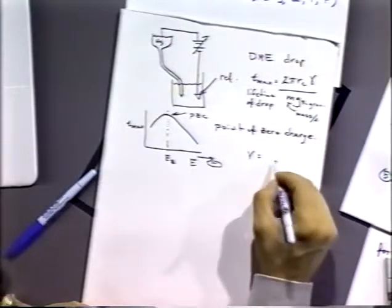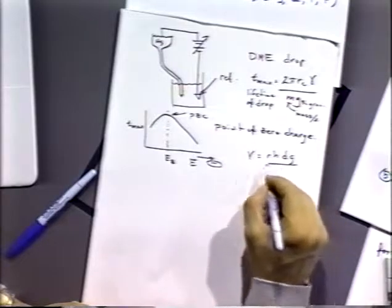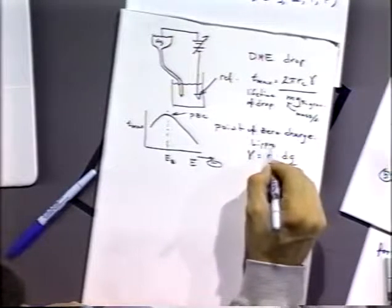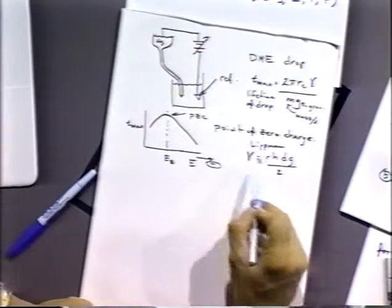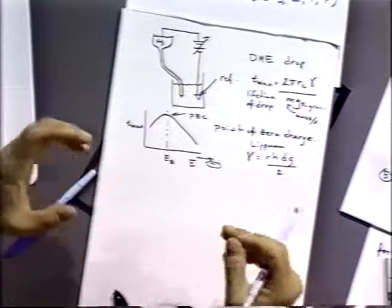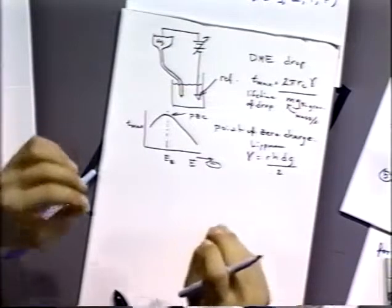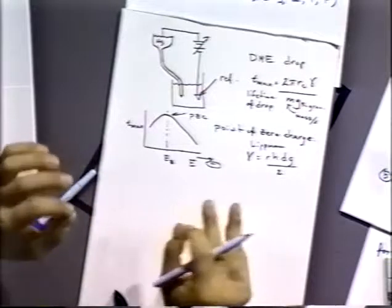There's another method developed by Lippmann — an alternate way to do the same experiment. It's a little more tricky but also more sensitive. Rather than waiting for drops to fall, Lippmann said let's balance exactly the force needed to hold the drop from falling — a null measurement, which is more sensitive. Lippmann's equation involves the capillary radius, the height of the mercury, the density of mercury, and gravity. This is an alternate way of doing it.